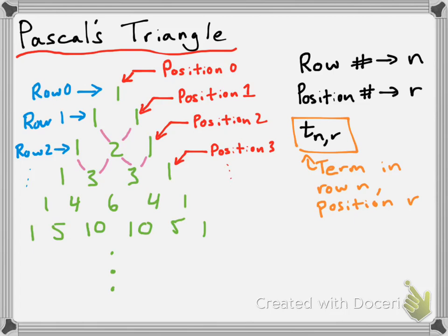What we should do is pick out a particular term and see if we can name it. If you count the row numbers from the top — row 0, row 1, row 2, row 3, row 4, row 5 — it appears to be in row 5. And if you count from the left to the right: position 0, 1, 2, 3 — it looks like it's going to be in row 5, position 3, which means that this is T(5, 3). So this is the term in row 5, position 3 — the unique name for that particular term.